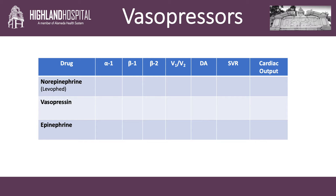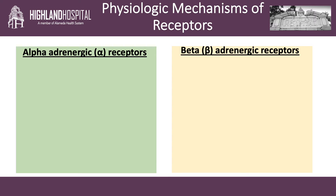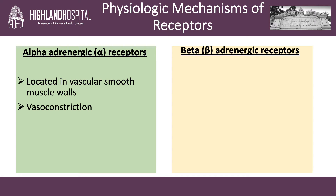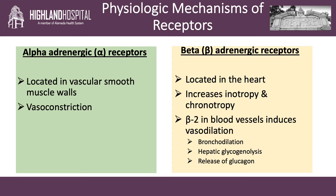As we go through, I will walk you through each drug and define its corresponding receptor affinity, in addition to the expected effect on systemic vascular resistance, or SVR, and cardiac output. Let's review the physiologic mechanisms of receptors. Alpha adrenergic receptors are located in the walls of the vascular smooth muscle and stimulation causes vasoconstriction. Beta-1 adrenergic receptors are located in the heart; stimulation causes both an increase in inotropy and chronotropy.